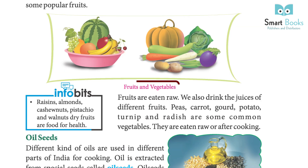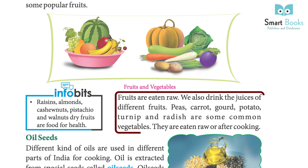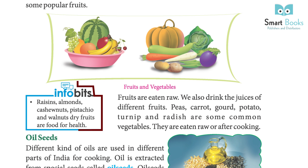Fruits are eaten raw. We also drink the juices of different fruits. Peas, carrot, goat, potato, turnip, and radish are some common vegetables. They are eaten raw or after cooking.